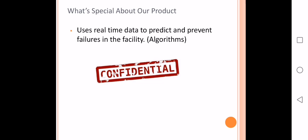What makes our product special and different? We are going to use real-time data to predict and prevent failures in the facility, using all the data gathered from the machinery. We will also train algorithms that will be built into the logic of the device. Importantly, these predicting algorithms can be retrained if something changes in the manufacturing lines, so you can adapt your device.